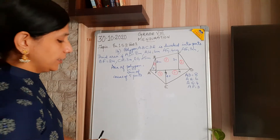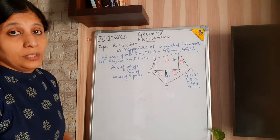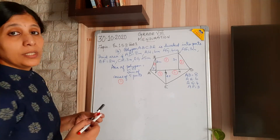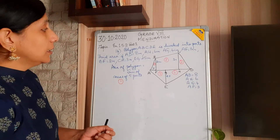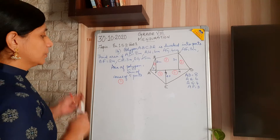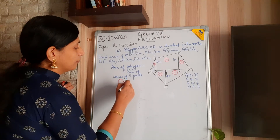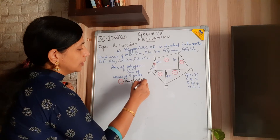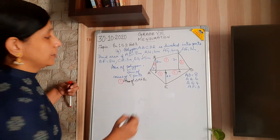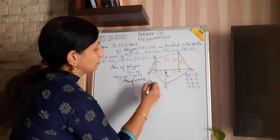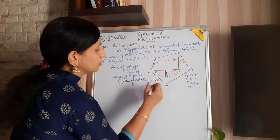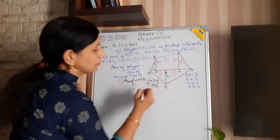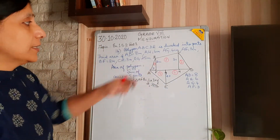Part 1 is a triangle. Area of triangle AFB equals half × base × height = half × 3 × 2 = 3 centimetres square. So you got the first part as 3 centimetres square.